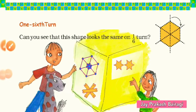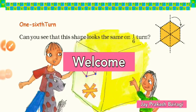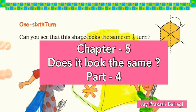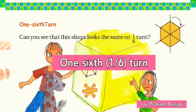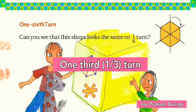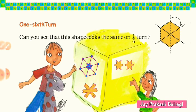Hello dear students and welcome to this class video. This is the fourth part of the fifth chapter of Class 5 Mathematics, and I am Jay Prakash. Let's start the class now. Today we have only two topics: the first one is one sixth turn, and the second one is one third turn.